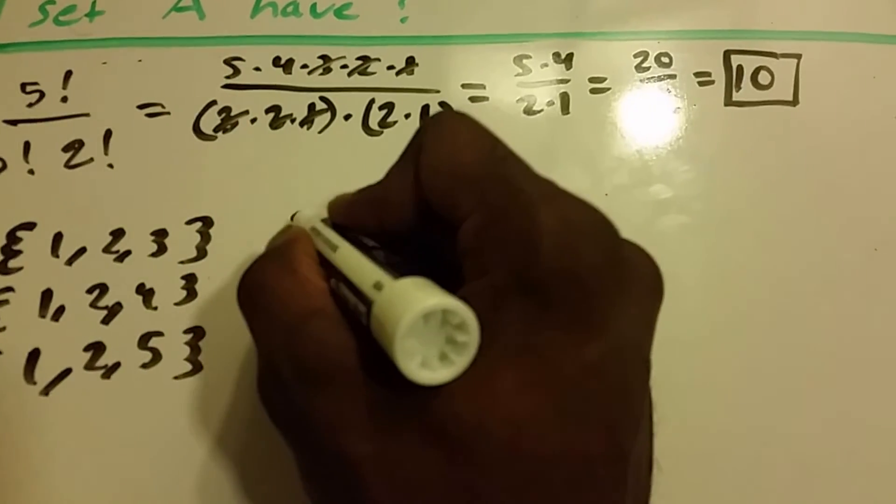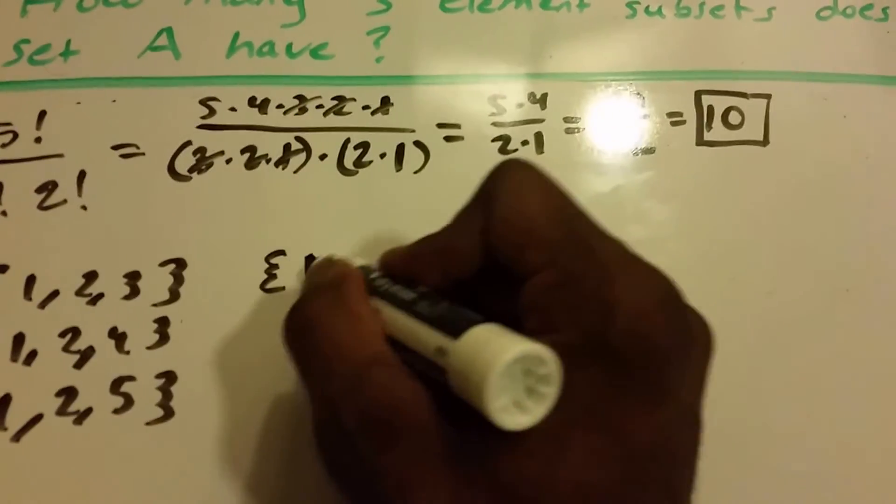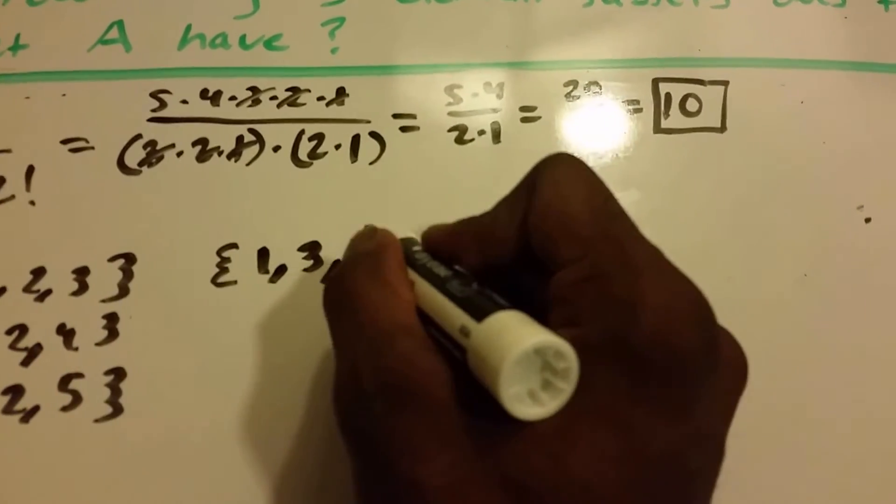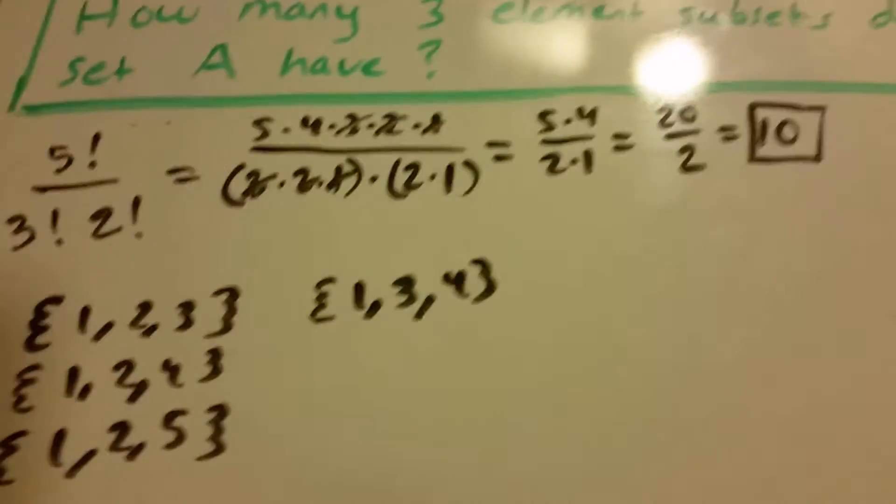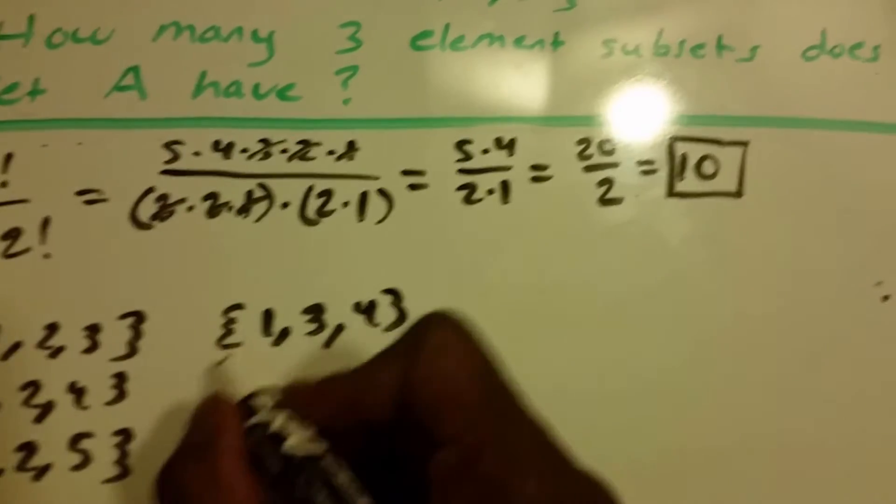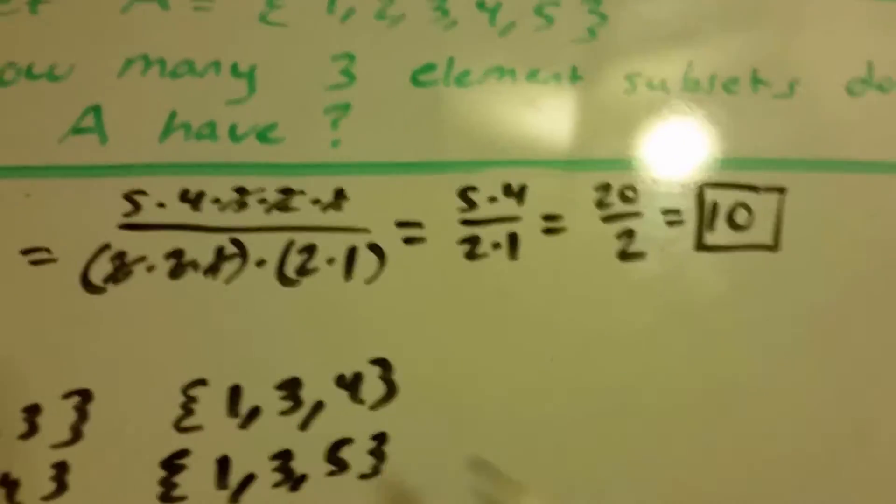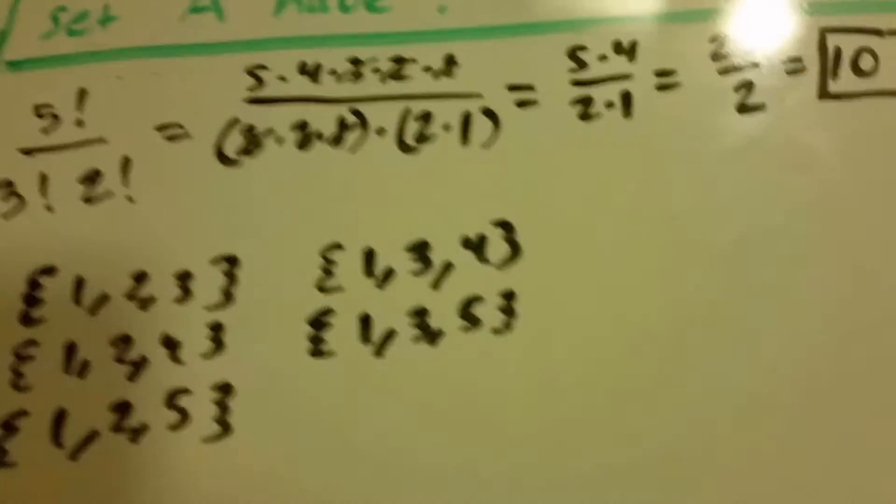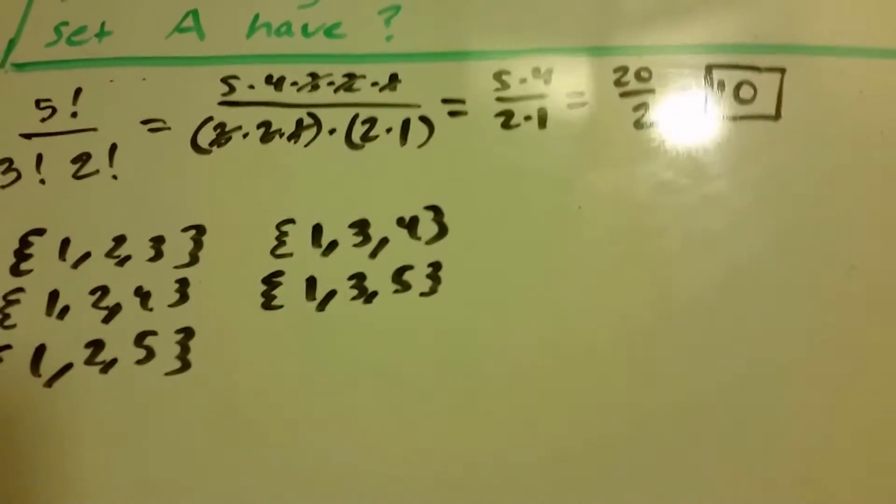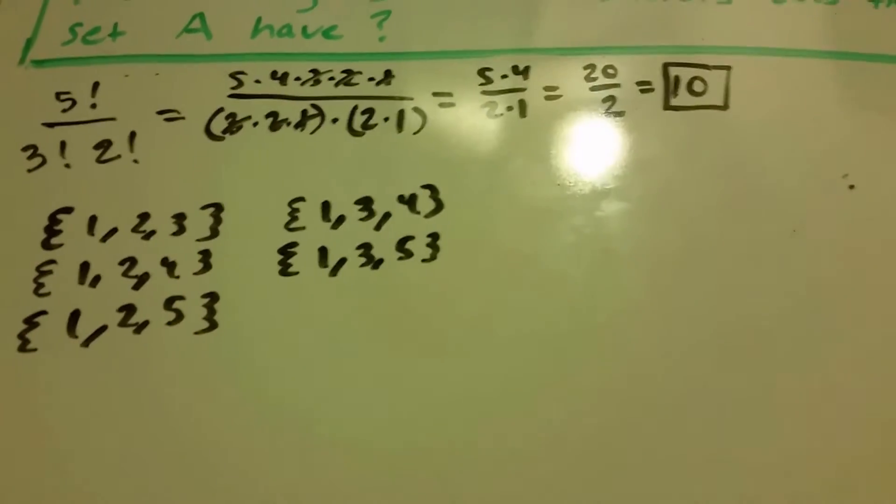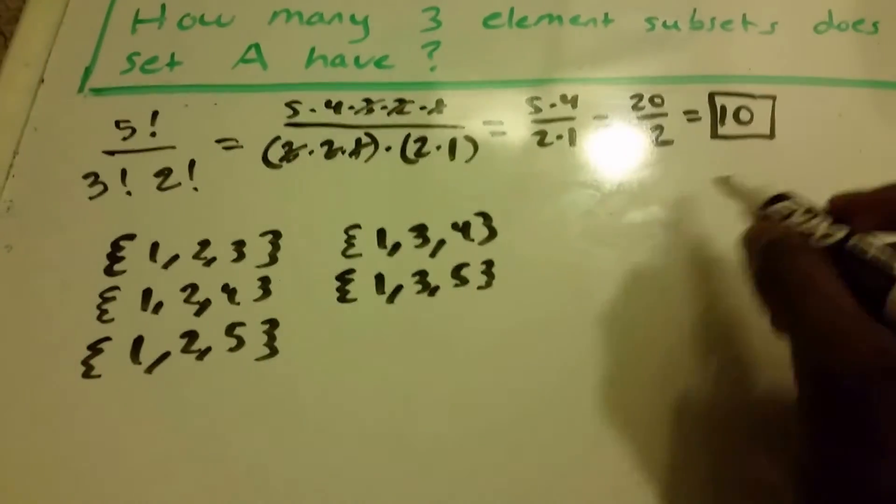Alright, and let's keep going here. Now we get 1, 3, 4. And we're going to do 1, 3, 5. So right now we have 5 of these 3 element subsets. And according to our answer we can get 10.